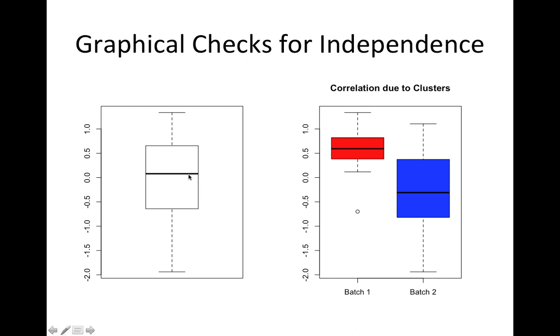You could make box plots of the data in batch one and batch two. And here we have a picture where it's clear that although this is the overall data set, units within batches are pretty correlated with each other. If you're in batch one, I know you're most likely going to have a higher value. And so I would want to take those clusters into account and not use a procedure that assumed independence and ignored those batches.